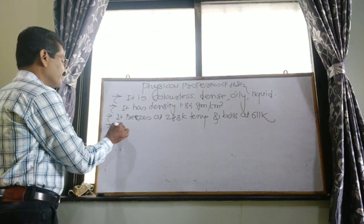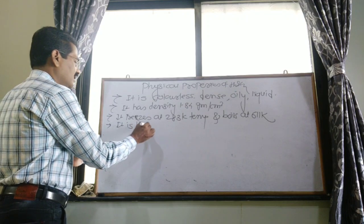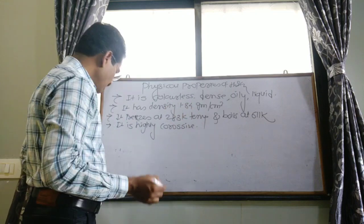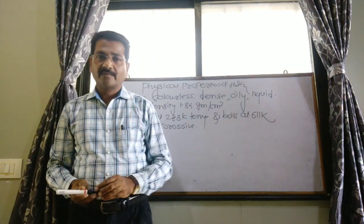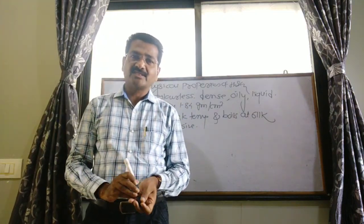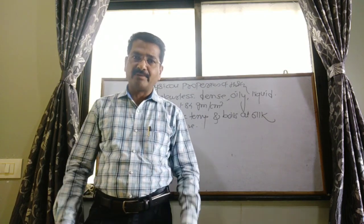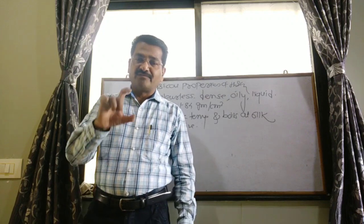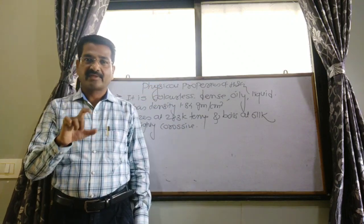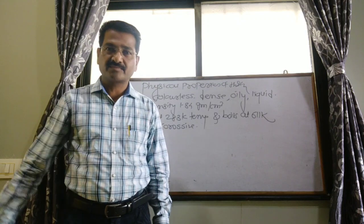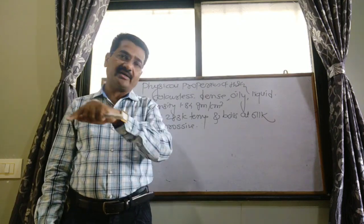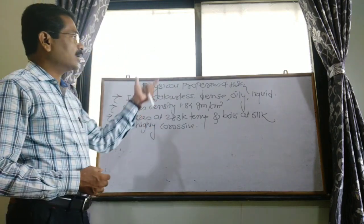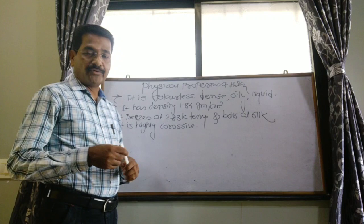Sulfuric acid is highly corrosive in nature. Whenever sulfuric acid is put into any vessel made of metal, it undergoes corrosion. For example, if sulfuric acid is taken in iron metal vessels, then that vessel can be corroded. So all these are the physical properties of sulfuric acid.